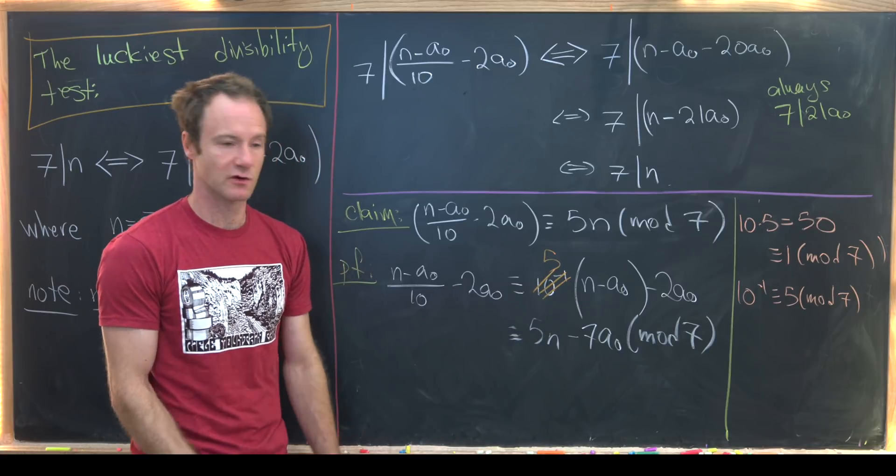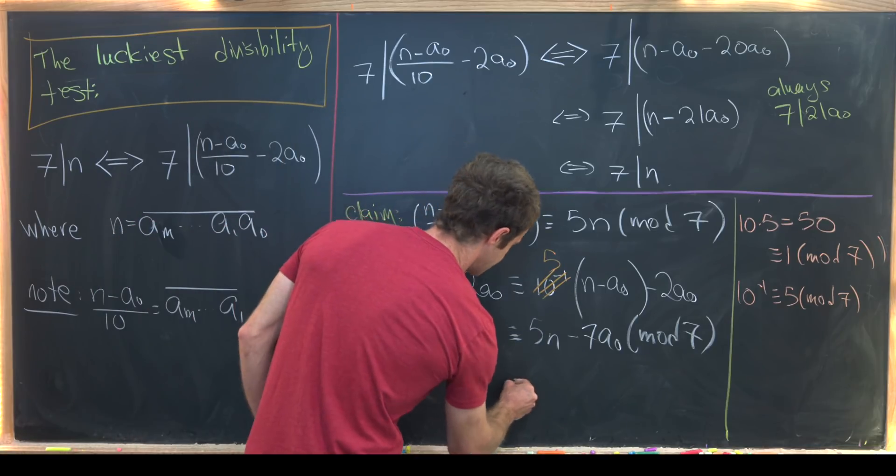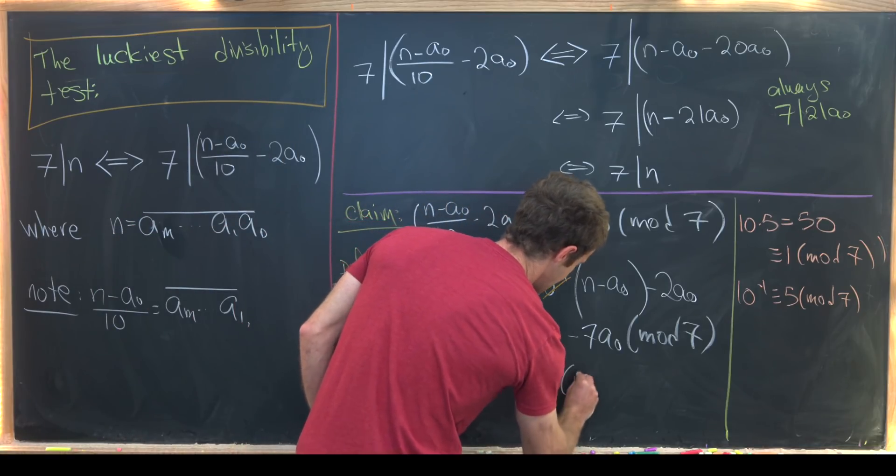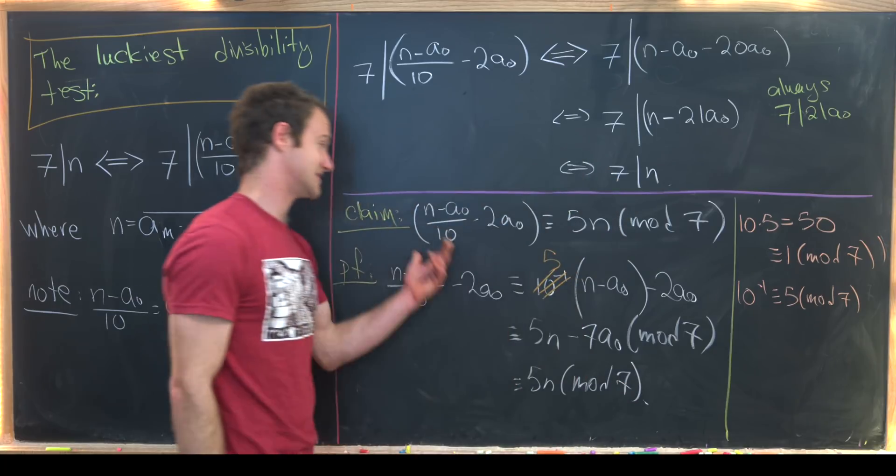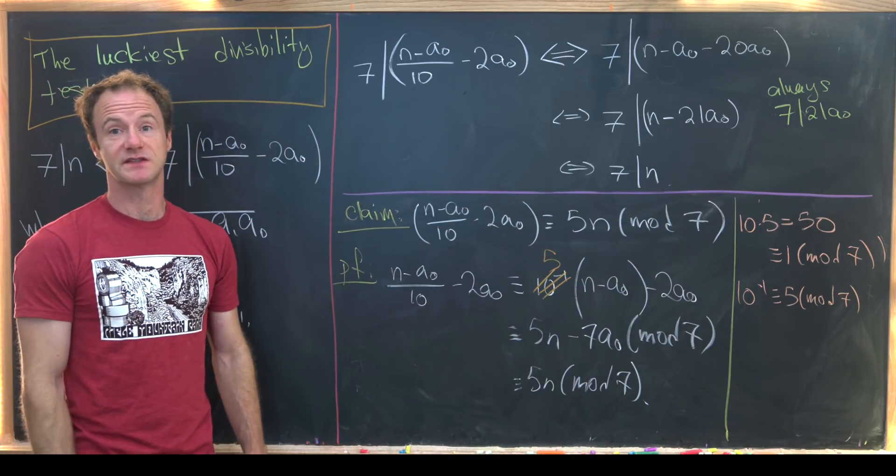But now 7 is congruent to 0 mod 7. So this all simplifies down to just 5n mod 7, which is exactly what we wanted to show. And that's a good place to stop.